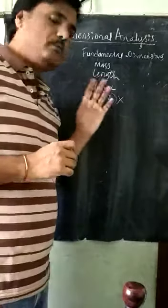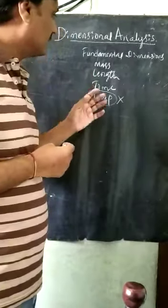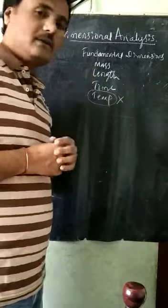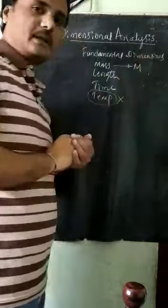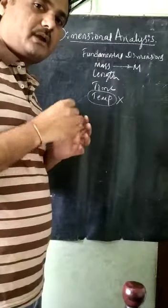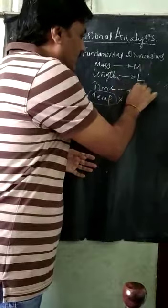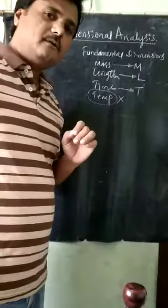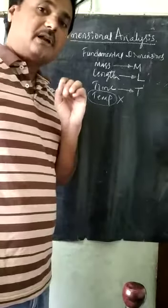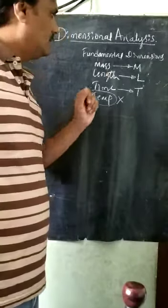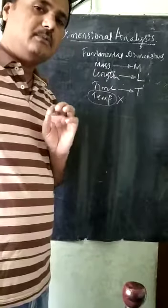In fluid flow physical problems, we are considering three fundamental dimensions: Mass, which is represented as capital M; Length, represented as capital L; and Time, represented as capital T. This is how we represent the three fundamental dimensions for dimensional analysis. This is also called the MLT form — M means mass, L means length, T means time.